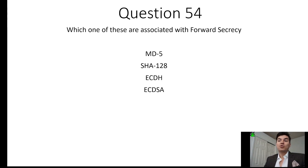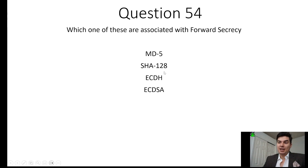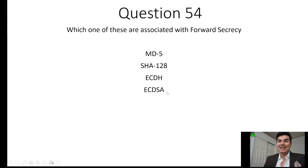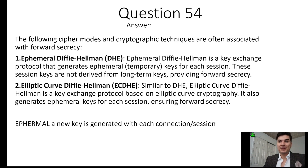Question 54: Which one of these is associated with forward secrecy? We want to eliminate options that are not possible. MD stands for message digest, and HA refers to hashing algorithm — those are definitely not the answers. This is elliptic curve Diffie-Hellman, which is for key exchange, and this is elliptic curve digital signature algorithm. So the answer is elliptic curve Diffie-Hellman.